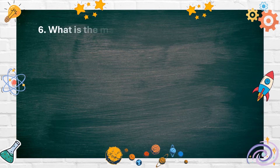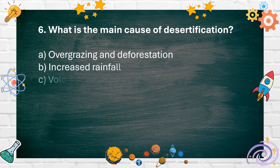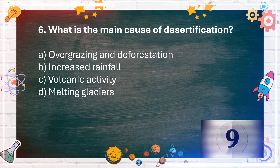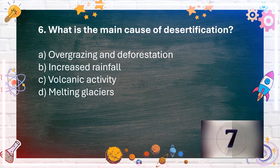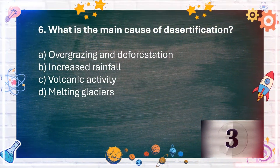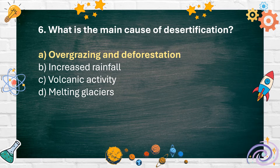Number 6. What is the main cause of desertification? A. Overgrazing and deforestation. B. Increased rainfall. C. Volcanic activity. D. Melting glaciers. The answer is A. Overgrazing and deforestation.